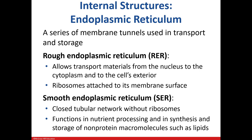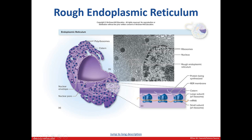Let's continue with the internal structures. Our rough endoplasmic reticulum is studded with ribosomes, and its main function is protein synthesis. The smooth ER does not contain ribosomes, so it plays no role in protein synthesis. Its job is nutrient processing along with lipid synthesis. Here we can see the rough ER and a zoomed-in view of the ribosomes found on its surface.